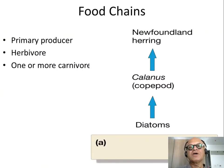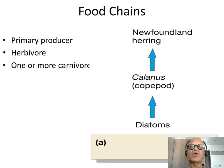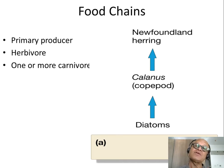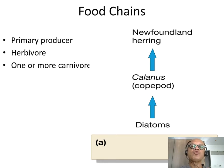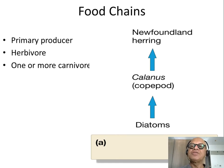The next step of this thought process is food chains and food webs. We talked about primary producers, herbivores, and then one or more carnivores. A food chain implies a linear relation from the producer — like a diatom, which is a photosynthesizer — to a zooplankton called copepod (Calanus, with species like finmarkicus), and the copepod is eaten by the Newfoundland herring.